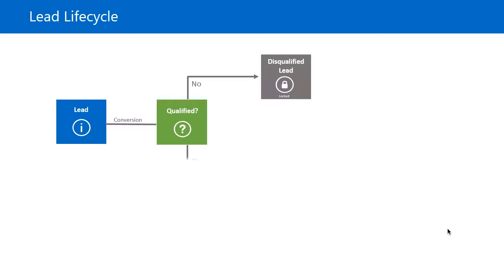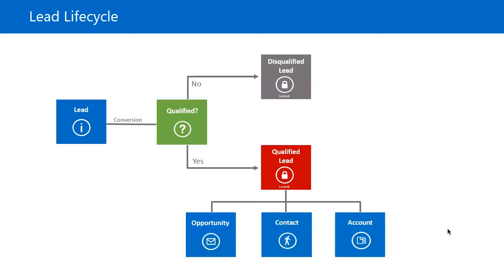If we decide to qualify the lead because we determine it is a viable customer, we could qualify the lead. Once the lead is qualified, like when it's disqualified, the lead record is locked. In addition, the lead record is automatically converted into three separate records: an opportunity, an account, and a contact. Keep in mind that if you're a business-to-consumer organization and you don't deal with accounts but rather contacts, the lead would not be turned into an account — it would only be turned into an opportunity and a contact.